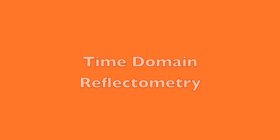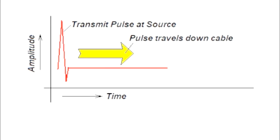Time domain reflectometry - that sure seems like a fancy word. In a nutshell, you can kind of think of it as radar for a cable. We basically transmit a pulse, like a radar, and that pulse travels down the cable, and any time it sees any imperfections in the cable, part or all of that energy is reflected back to the source. So over time we can look at any reflections, and we wouldn't be rv-project.com if we didn't build something when we're done with the discussion.